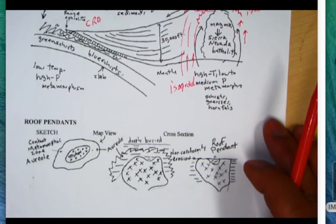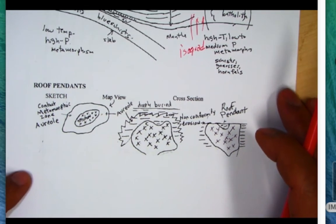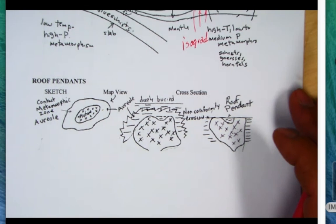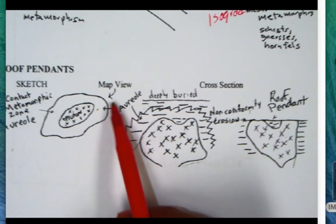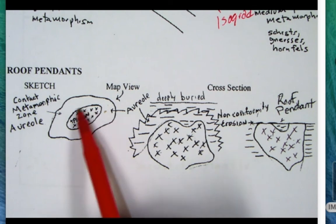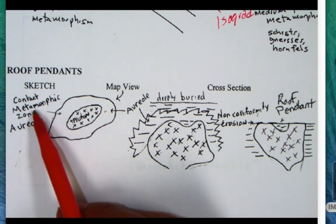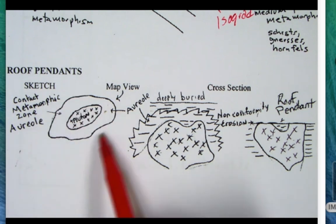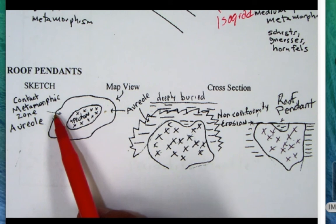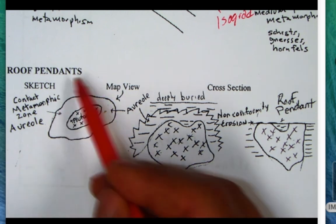I've been talking about these roof pendants, so here is a little more detail. Here's a little map view showing how you would see an igneous rock, a pluton, and then around it you would see this contact metamorphic zone called an aureole. This aureole would be the metamorphic zone, and that was basically our roof pendant.